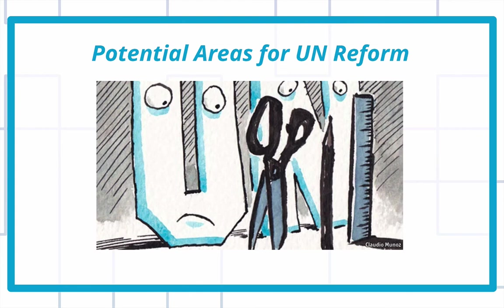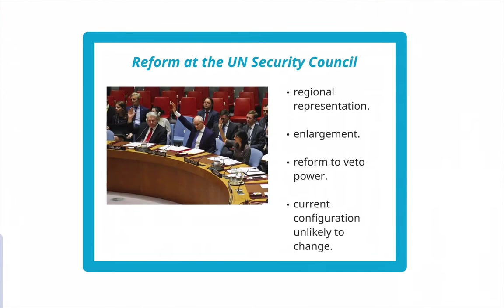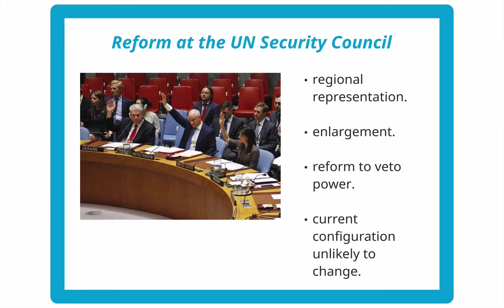We're going to move to talking about potential areas for reform. The idea is that there are areas in which it's known that the United Nations is not capable of fulfilling its mission, or is fulfilling its mission in some deficient way. How could we take the organization and reform it to make it more effective? We've talked about the UN Security Council, and you're now actively engaged in a simulation of what happens at the Security Council on two specific resolutions. There are a number of suggestions for reform here.